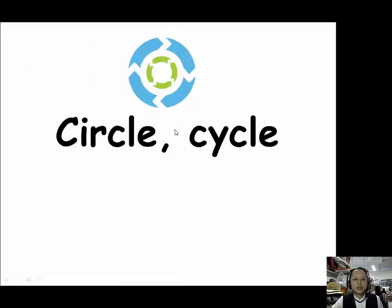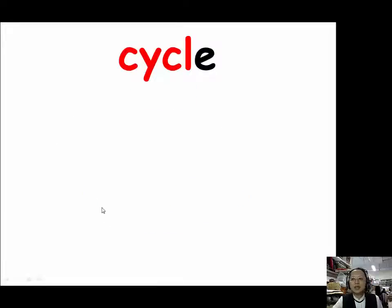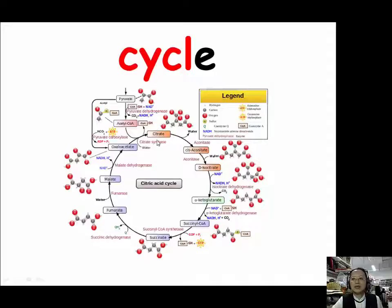When we want to describe things that are circle-shaped, we use the prefixes CYCL (C-Y-C-L), GYR (G-Y-R), and ORB. For the prefix CYCL, our example is cycle, as in the citric acid cycle. We use the term cycle because the last product of the citric acid cycle is actually the substrate of its first reaction, so it goes around like a cycle.